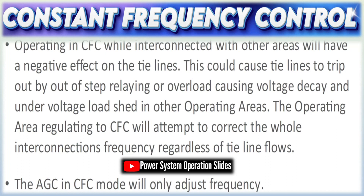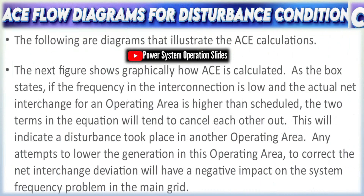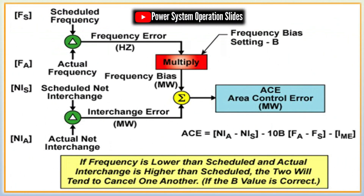The constant net interchange concept establishes that the net power exchanged over the tie lines should remain at a predetermined value. Even when local load demand changes, the interchange is held constant by adjusting the generation accordingly. Maintaining constant net interchange is essential in interconnected systems, ensuring that power trading and contractual obligations between regions are respected. In constant frequency control mode, the primary objective is solely to regulate frequency — the AGC responds to any frequency deviation caused by an imbalance of load and generation by dispatching appropriate control adjustments, thereby keeping the grid frequency near its target (e.g., 50 or 60 Hz). This is crucial since most grid-connected equipment is designed to operate within a very narrow frequency band.